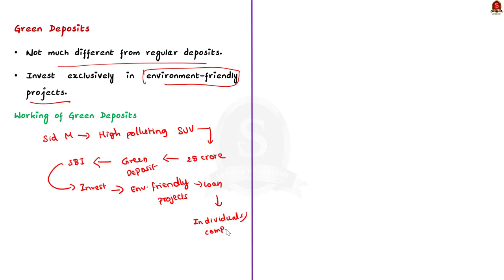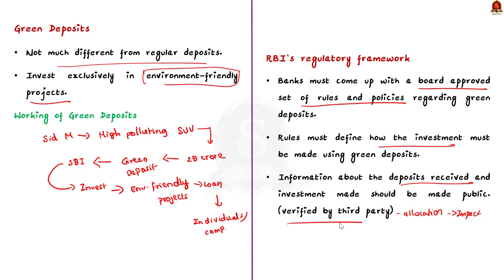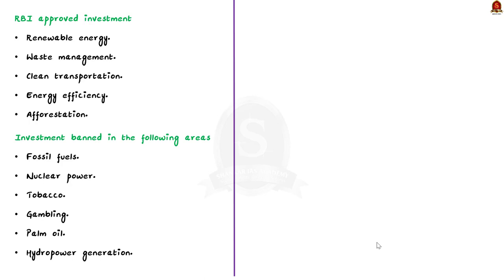Regarding the RBI regulatory framework for green deposits: First, banks must have a board-approved policy on how to invest green deposit amounts. Second, this policy must be made public. Third, banks must publicly disclose the amount of green deposits received, how they were allocated, and the environmental impact, verified by a third party. Finally, RBI has specified eligible sectors: renewable energy, waste management, clean transportation, energy efficiency, and afforestation. RBI bars banks from investing green deposits in fossil fuels, nuclear power, tobacco, gambling, palm oil, and hydropower generation.